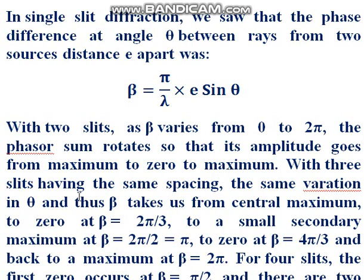With three slits, increasing the number of slits with the same spacing, the same variation in theta and thus beta takes us from the central maximum to zero at beta = 2π/3, to a small secondary maximum at beta = π, to zero at beta = 4π/3, and back to the maximum at beta = 2π.